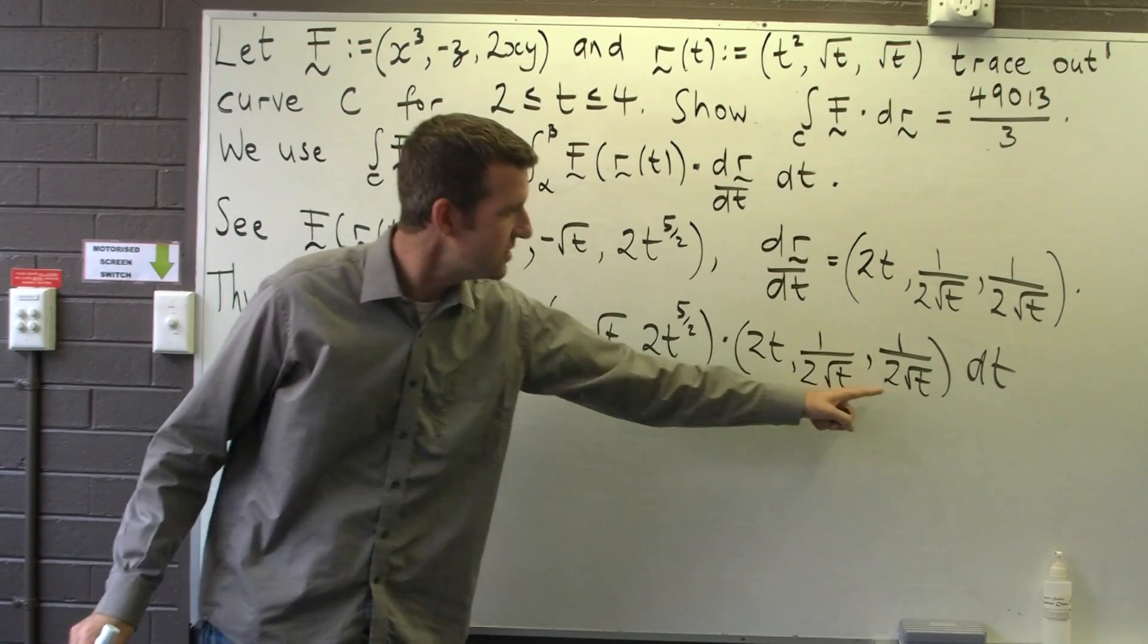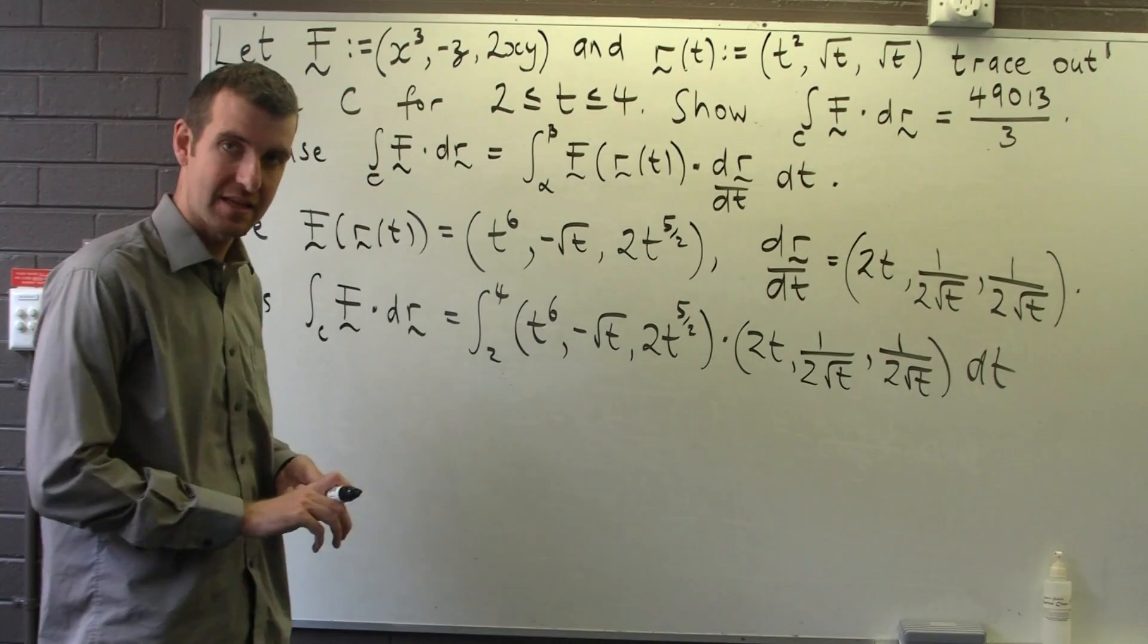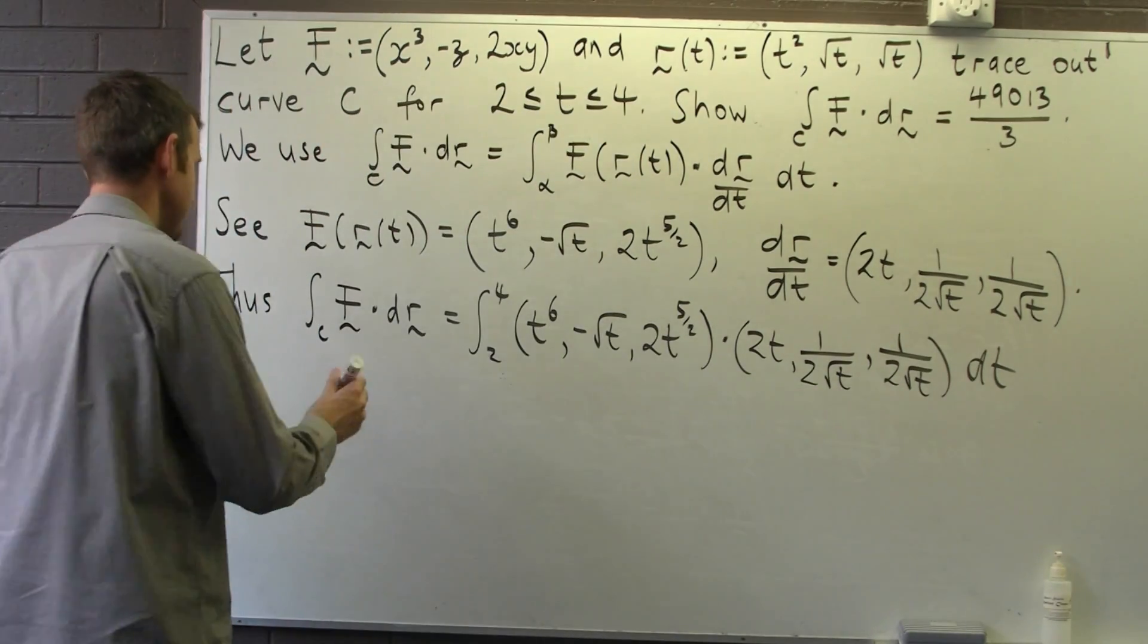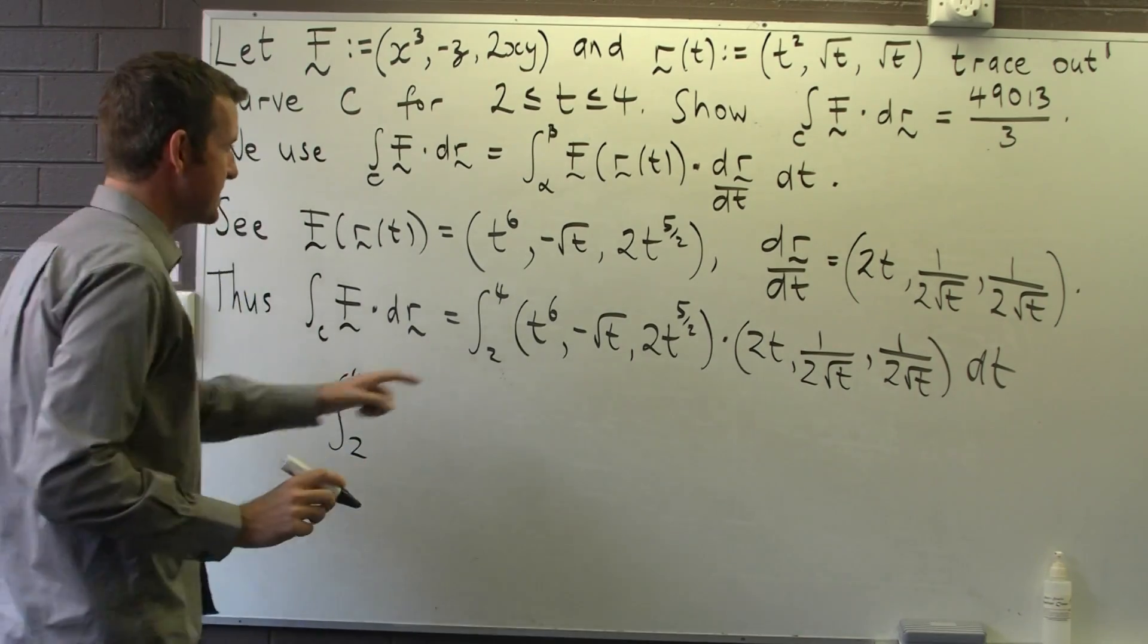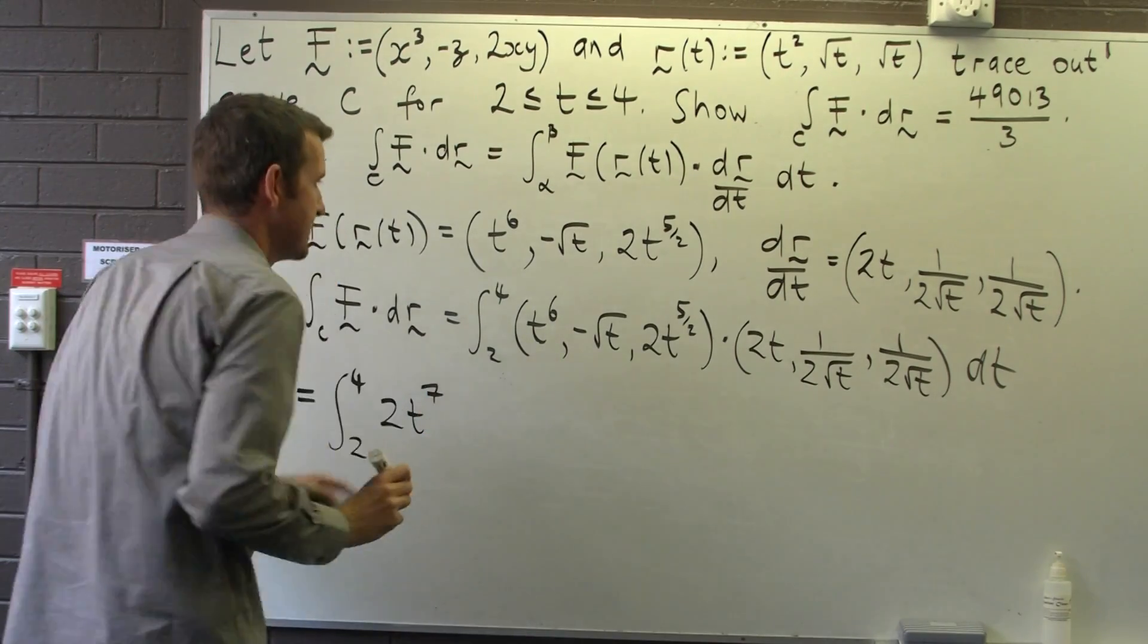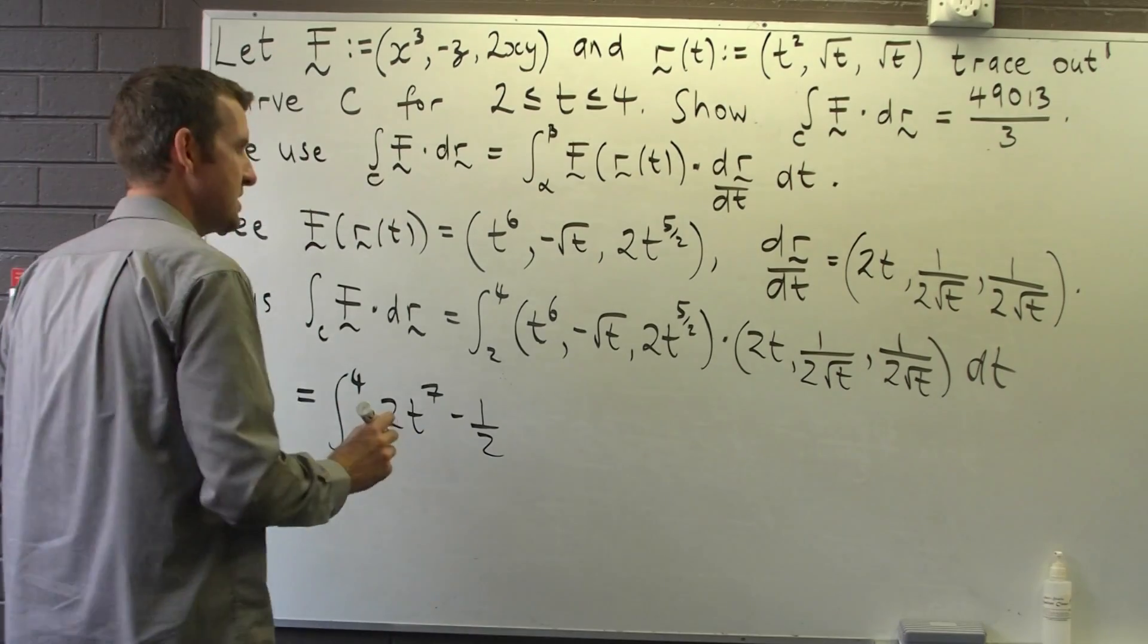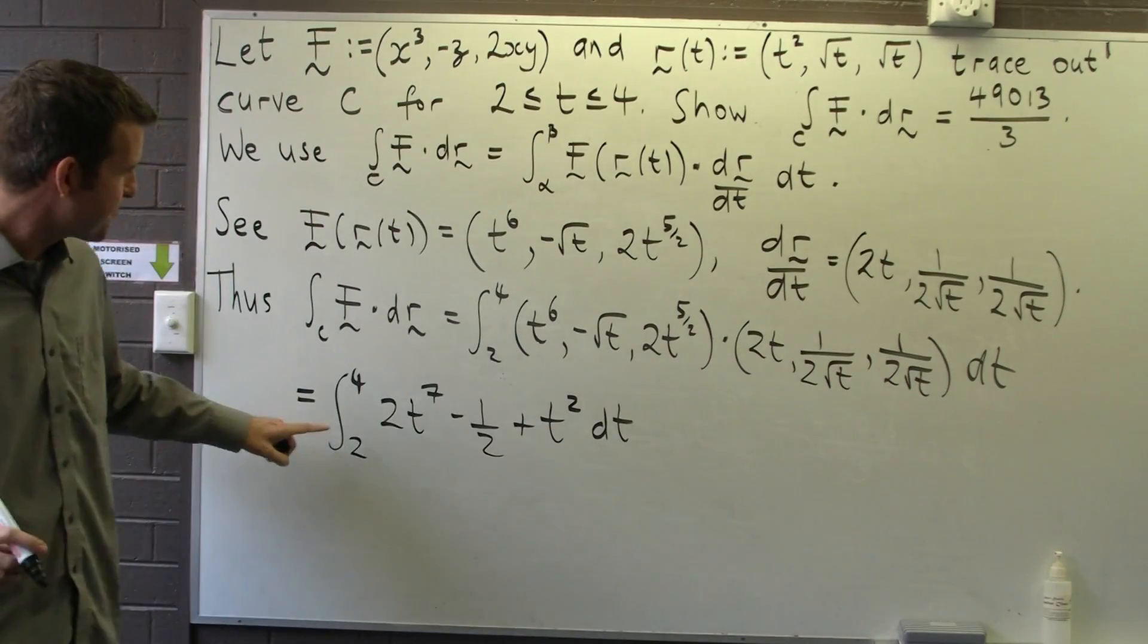We do the dot product first. Remember for a dot product you multiply the components - the first component by the first component, second component by the second component, third component by the third component, and add. So t to the 6 times 2t is 2t to the 7, minus root t times 1 on 2 root t is minus 1 half, and this times this is going to give us t squared.